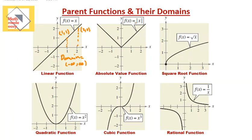The next function is f of x equals absolute value of x. You need to be able to identify them — an absolute value function looks like a V shape. Again, the domain is all values of x. This function extends forever in both directions — to infinity on one side and negative infinity on the other — so the domain is from negative infinity to infinity.